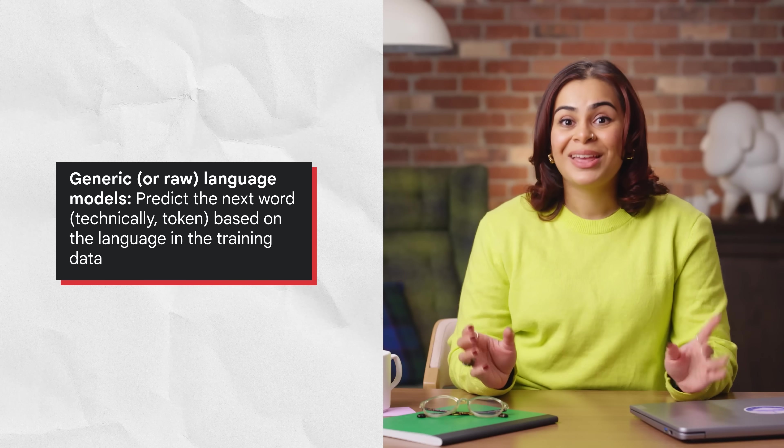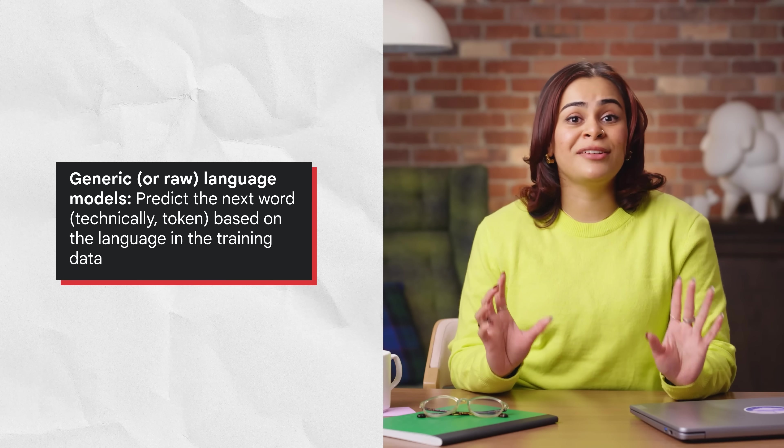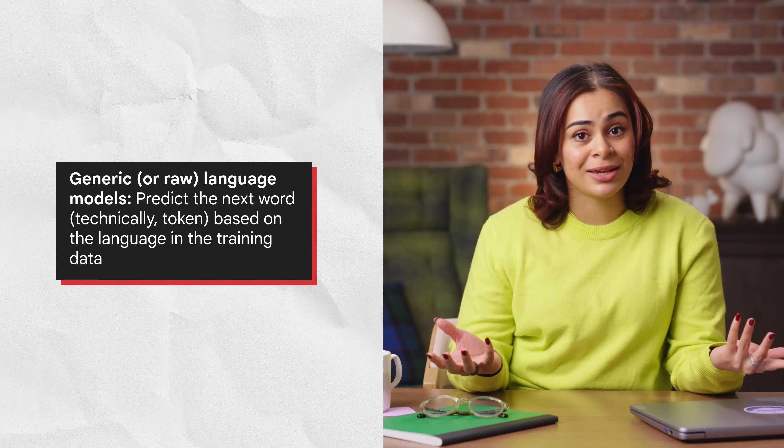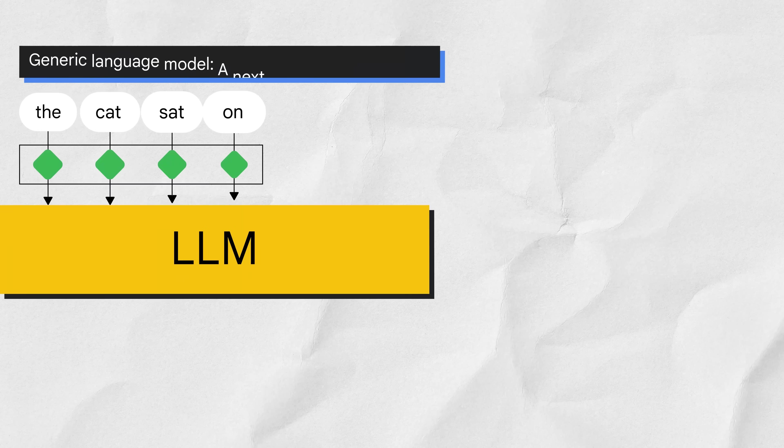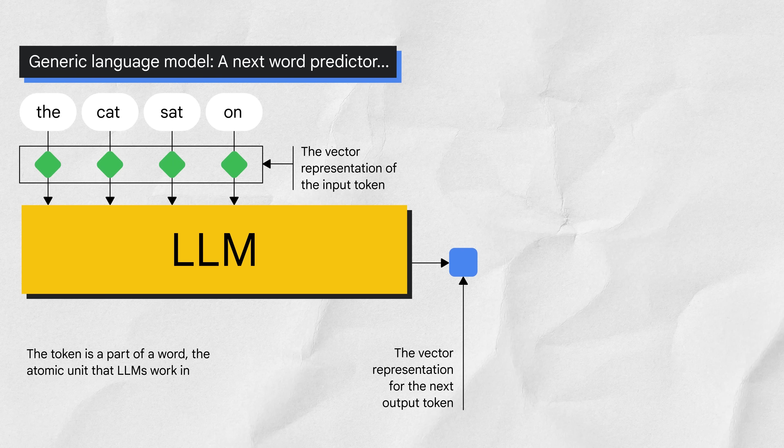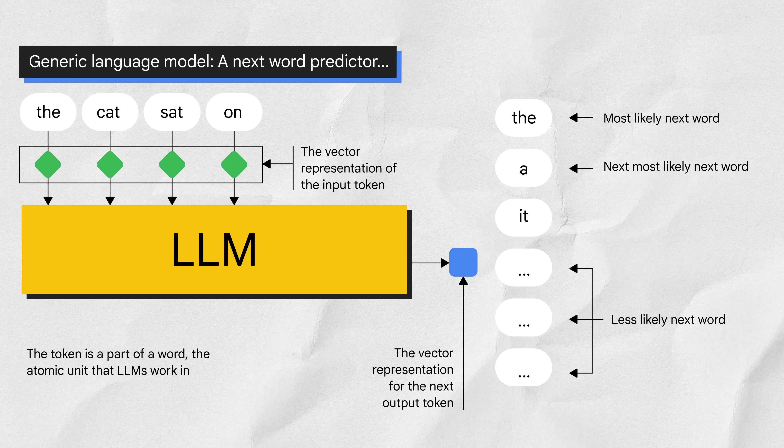There are three kinds of large language models: generic language models, instruction tuned, and dialogue tuned. Each needs prompting in a different way. Generic language models predict the next word based on the language in the training data. For example, given the phrase 'the cat sat on,' the next word should be 'the' — and you can see that 'the' is most likely the next word. Think of this model type as autocomplete in search.